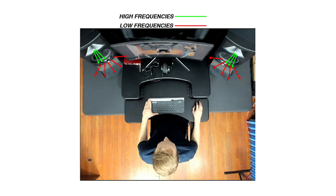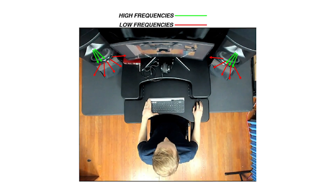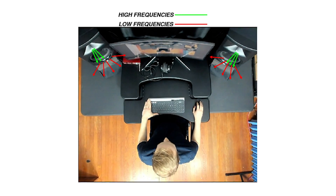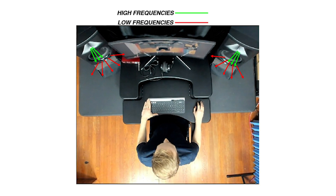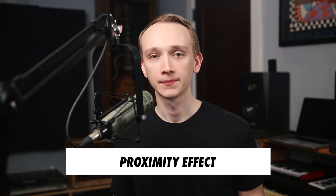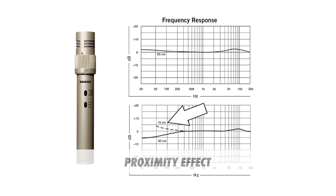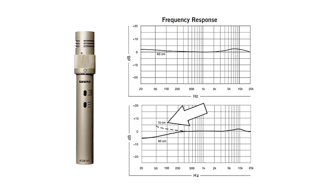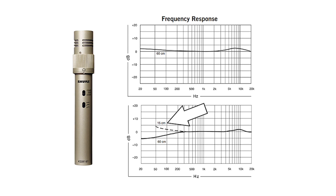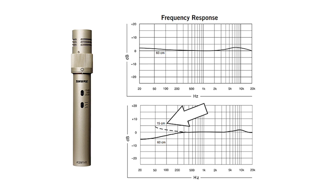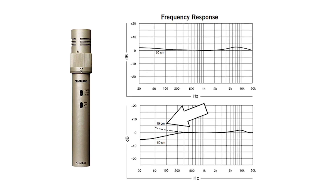Likewise, a speaker will sound darker to a listener who's off-axis to the high-frequency driver than it will to a listener who sits directly in front of the speaker. The second factor is the proximity effect. When using a directional microphone, you'll experience a bass boost as the microphone gets closer to the source. This of course affects the frequency response that you can expect from that microphone. I created a video that goes into much more depth on the proximity effect.